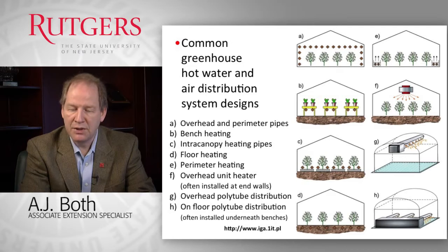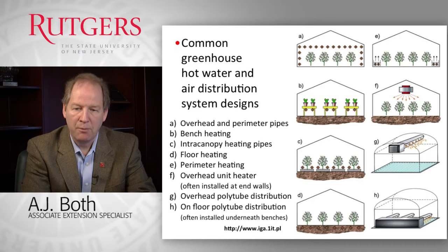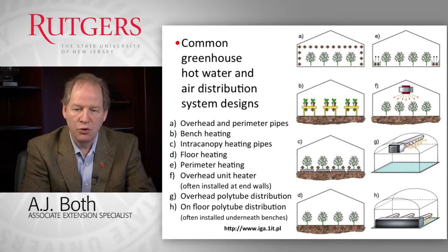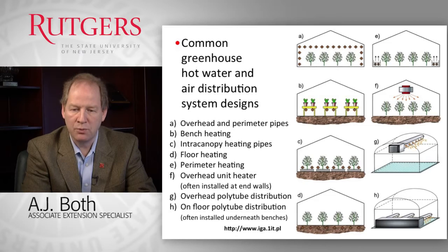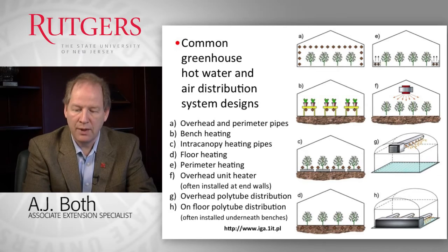We can have overhead unit heaters, sometimes operated by steam but typically by hot air, very often installed along the end walls that blow jets of warm air throughout the greenhouse environment. To improve the distribution of warm air, we can attach a polytube to the outlet of one of those unit heaters. Air comes out small holes all along the length of the polytube, distributing heat more uniformly. Those polytubes can be installed overhead or, when space allows, underneath the benches.